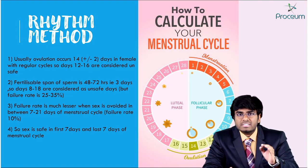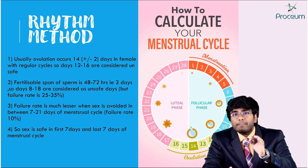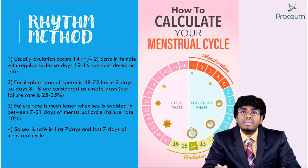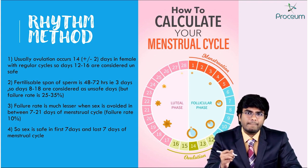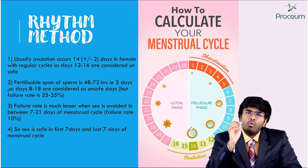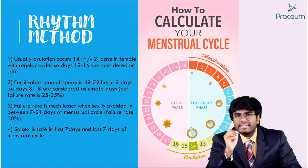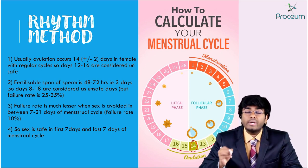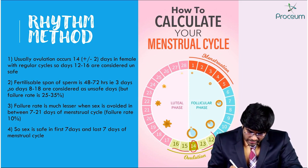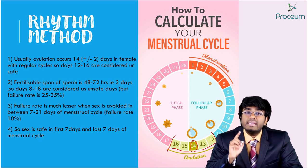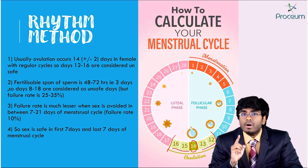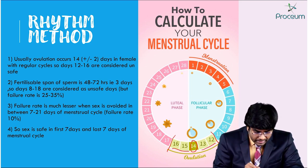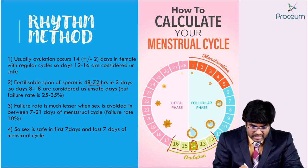The first natural family planning method for contraception is the rhythm method, also known as the calendar method. According to this, the ovum is going to be ovulated on day 14 plus or minus 2 days — so usually day 12 to day 16, there is ovulation. A sperm can be viable up to 72 hours, that is 3 days.